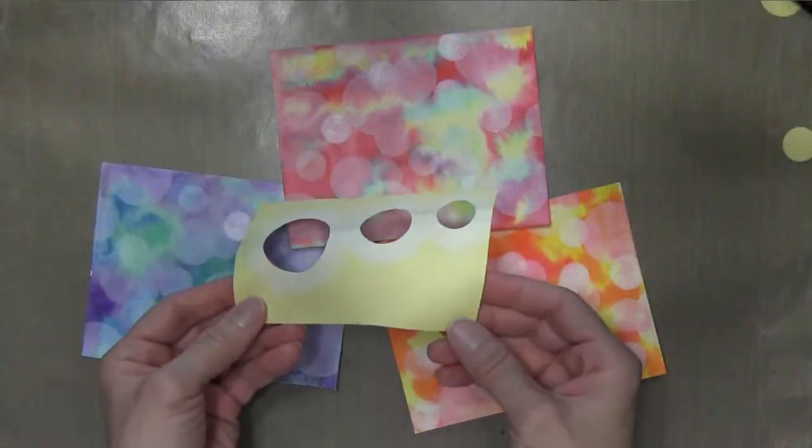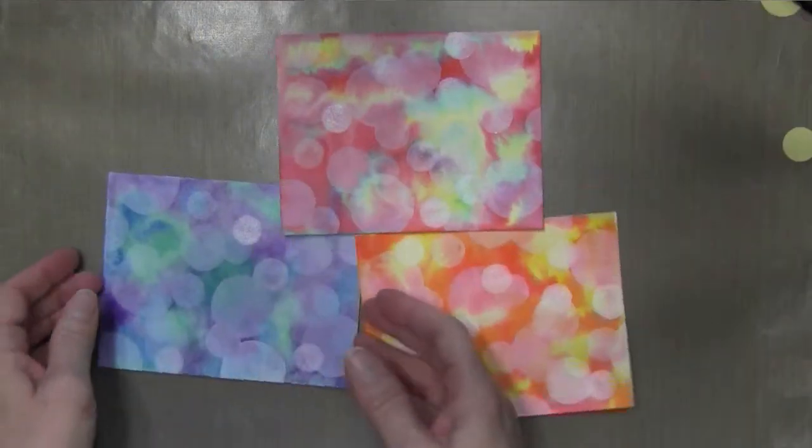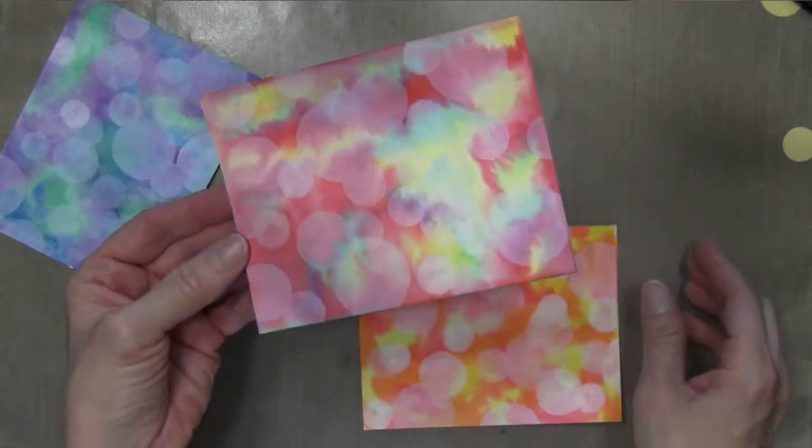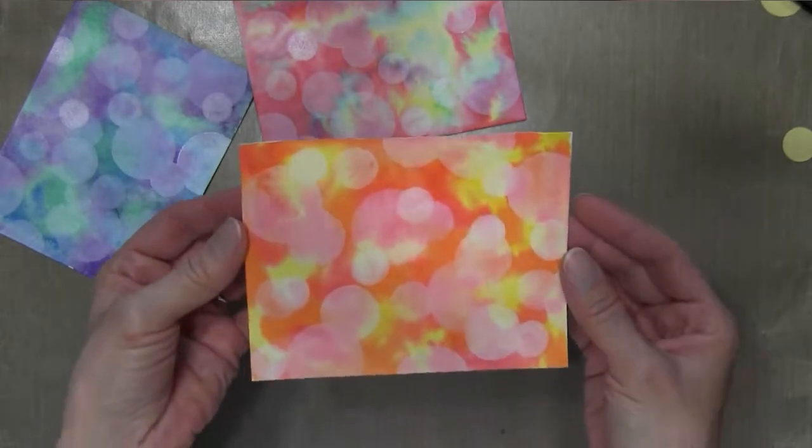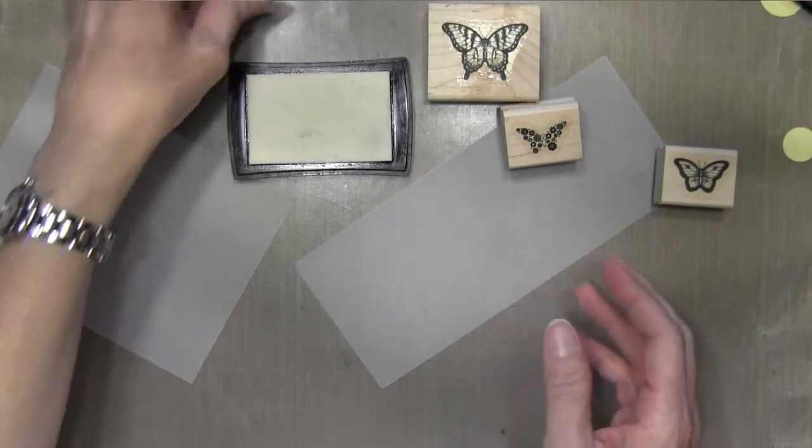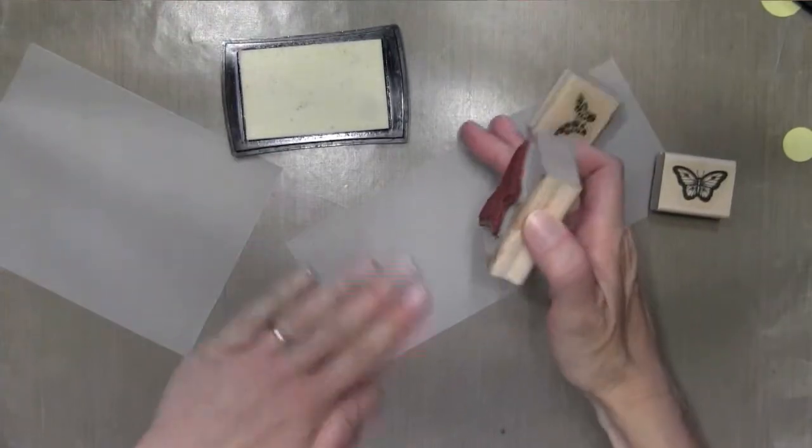Here they all are. I ended up using that one post-it for all of them. It held up really well. They all just look a little bit different, different colors. By the way, the other colors in that Distress Marker one were pistachio and festive berries. I forgot to tell you that.